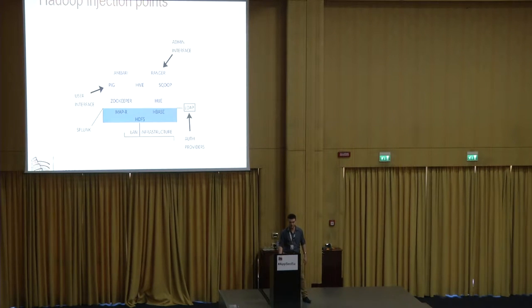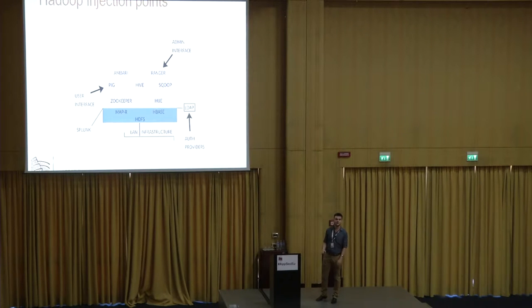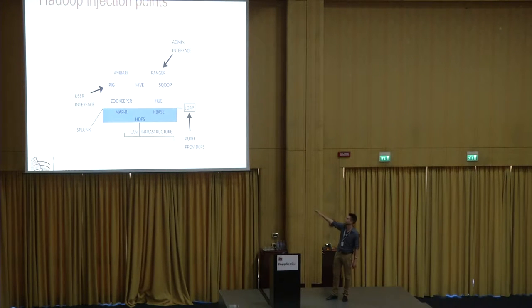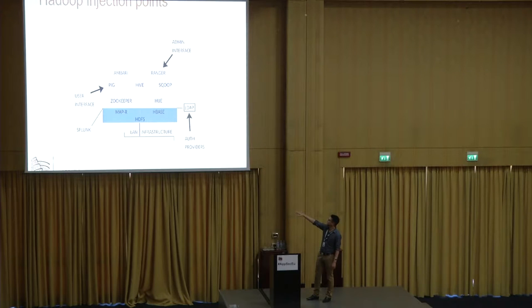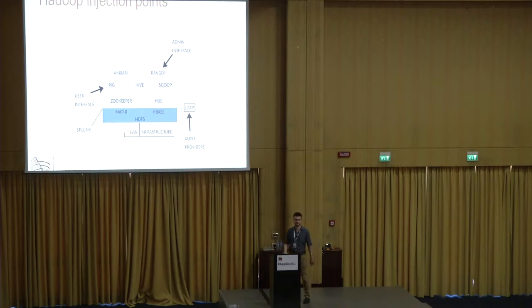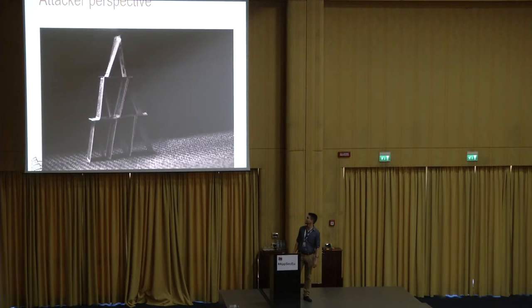There are many, many injection points. This is a really simplified version. We can attack the admin interfaces, which in most cases are Ambari and Ranger; user interfaces — the biggest being Apache Hue, which has modules for other interfaces; Splunk for logging; auth providers like LDAP and maybe Kerberos; and of course you can attack the LAN infrastructure with basic scanning tests. From the attacker perspective, it looked like this.